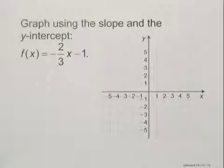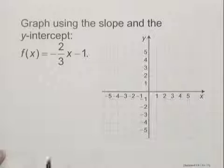Graph using the slope and the y-intercept, f(x) equals negative two-thirds x minus 1. Now when we use the slope and the y-intercept, we of course first have to determine the slope and the y-intercept.